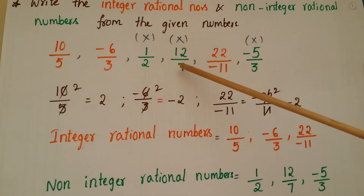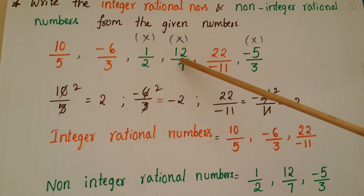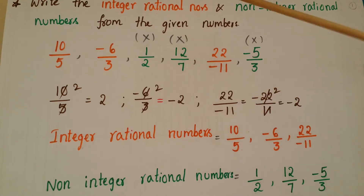If you take the next number 12 by 7, here also 12 by 7 cannot be divided by a common number. So this is also a non-integer rational number.